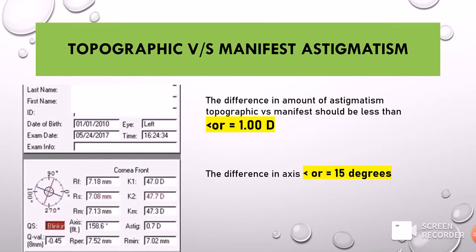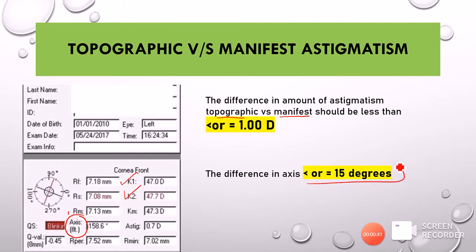Next we have topographic versus manifest astigmatism. The difference between K1 and K2 is topographic astigmatism, while the real astigmatism found using autorefractometer, subjective refraction, or retinoscopy is called manifest astigmatism. The difference between topographic and manifest astigmatism should be less than or equal to 1 diopter. Similarly, the difference between the topographic axis and the clinical refraction axis should be less than or equal to 15 degrees. Anything above that is suspicious and serves as a moderate risk of ectasia.